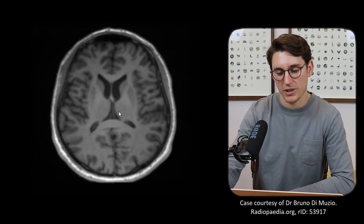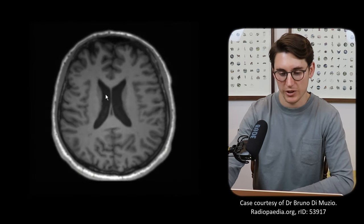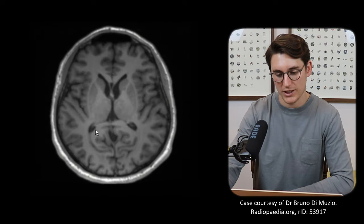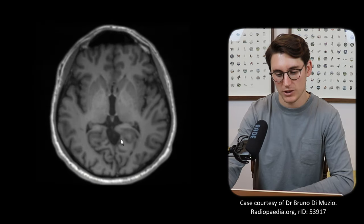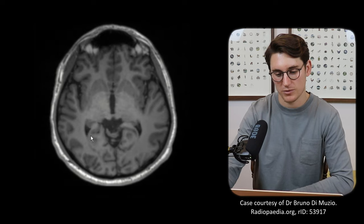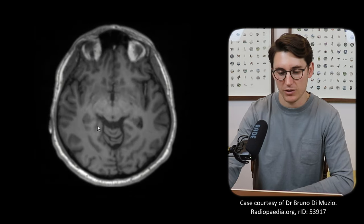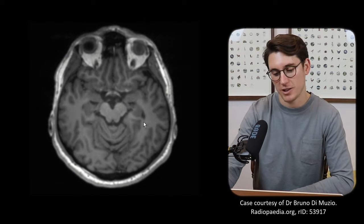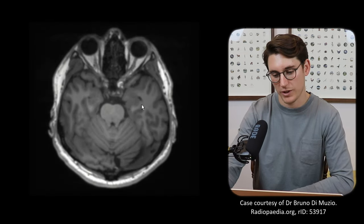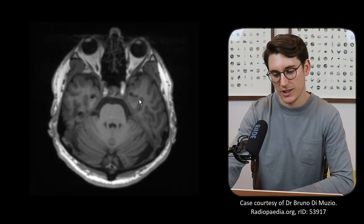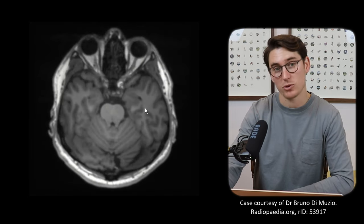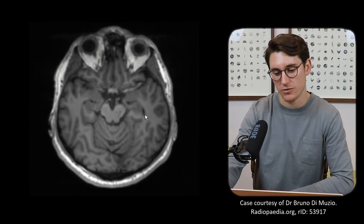Let's scan back up and follow this lateral ventricle down. We'll see it give off our occipital horns — small occipital horns in this patient — coming off backwards. Then following them further down, looking on the left hand side of the patient, we can see this comes all the way down into our temporal lobe. These are our temporal horns of the lateral ventricle.